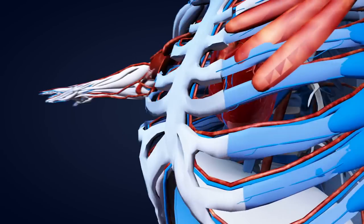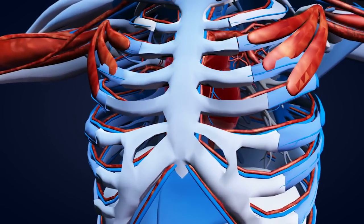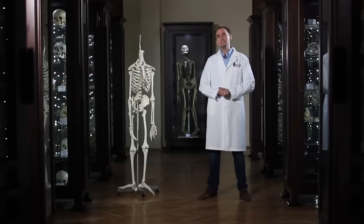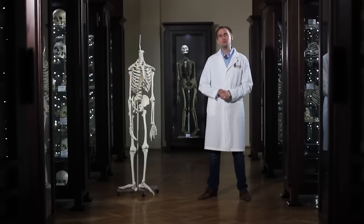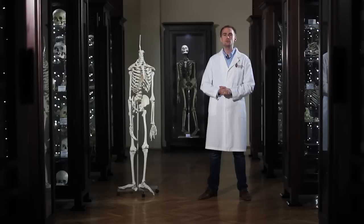Our rib cage protects our organs, our heart, and our lungs. Just as a house needs a strong skeleton to survive an earthquake, our bones provide our body with the frame we need in order to become the people we want to be in the future.